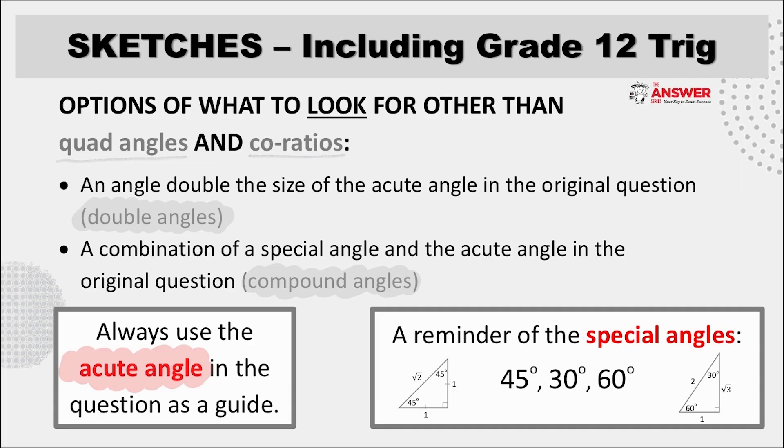So other than looking for the acute angle or its complement and their families we must also be on the lookout for angles double the size of the acute angle given or angles double the size of the complementary angle of the acute angle given as well as compound angle options which appear as a combination of the acute angle given and any of the special angles. These can often seem hidden so being proactive here really helps you to recognize them.